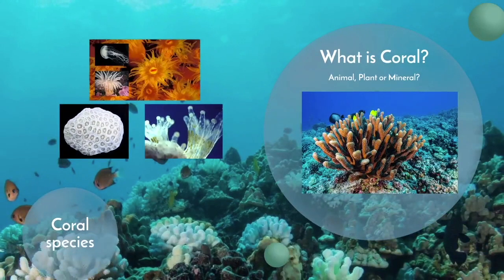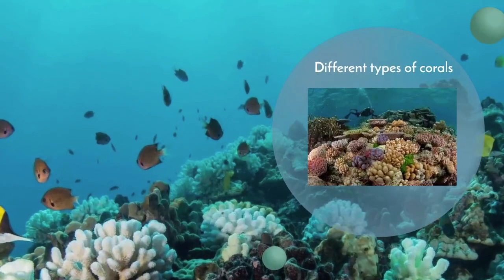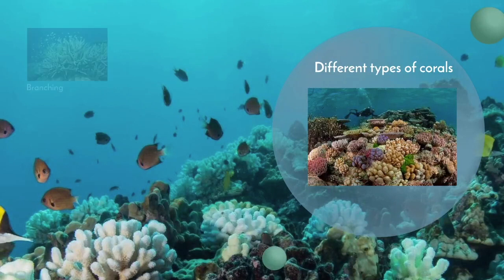Coral reefs are the most diverse ecosystems in the world, and there are many forms of corals with an estimated 2,500 species. When it comes to identifying them, they typically fall into eight different categories. The first is branching corals, with multiple layers or branch-like structures.